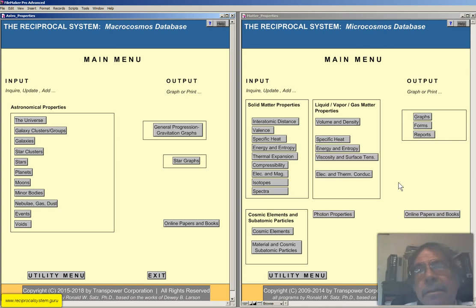So that software program is also available from Amazon.com or TransPowerCorp.com. Please study the reciprocal system and prove it for yourself. And thanks for your attention. Thank you very much.